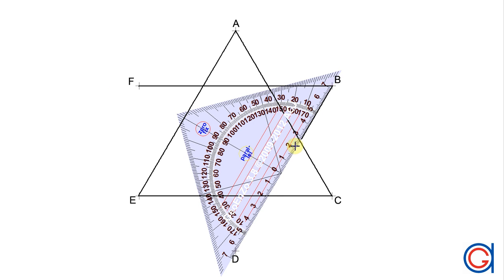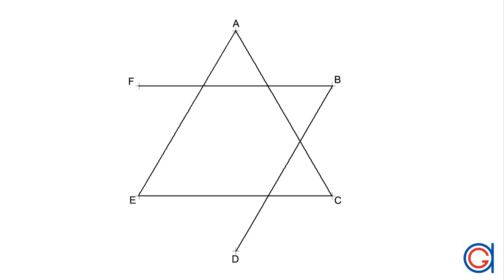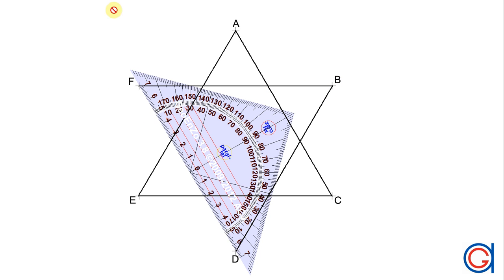So here we have B to D, skipping vertex C. And finally we will complete our equilateral triangle by joining vertex D to F, skipping vertex E.